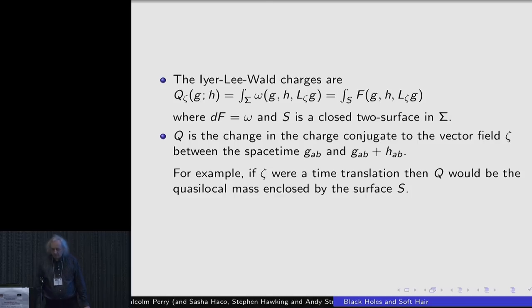So you can think of some simple examples. You could, for example, think about s being a surface at infinity, zeta being time translation, in which case this will give you the ADM energy. Or you could be a bit more ambitious and say, suppose that s was a two-surface just simply on some space-like surface, in which case if zeta were some general time translation, it would give you one of the possible definitions of quasi-local energy.